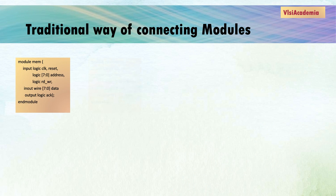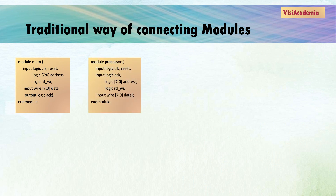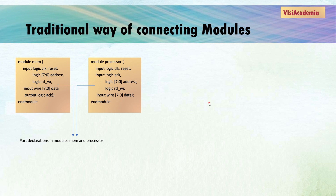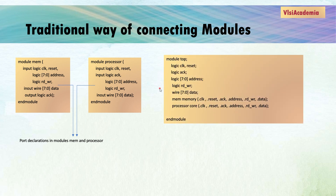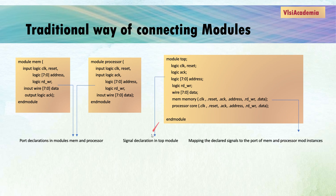We will take an example of two modules called Module Processor and Module Memory. In these modules, we are declaring the ports for both modules, and some logic is also defined inside these modules. Now, if we want to connect these two modules to a top module, we are declaring the signals of the top module, then instantiating these two modules using dot name connection to connect memory and processor to our top module.